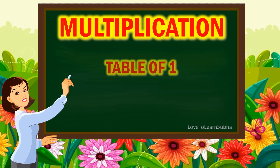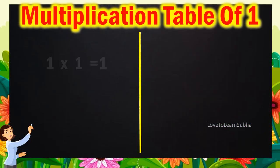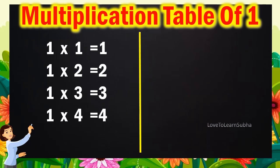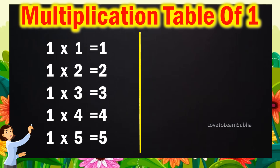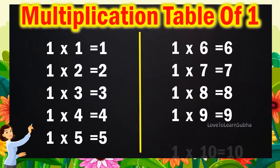Now, let's repeat it once again. 1-1s are 1, 1-2s are 2, 1-3s are 3, 1-4s are 4, 1-5s are 5, 1-6s are 6, 1-7s are 7, 1-8s are 8, 1-9s are 9, 1-10s are 10.